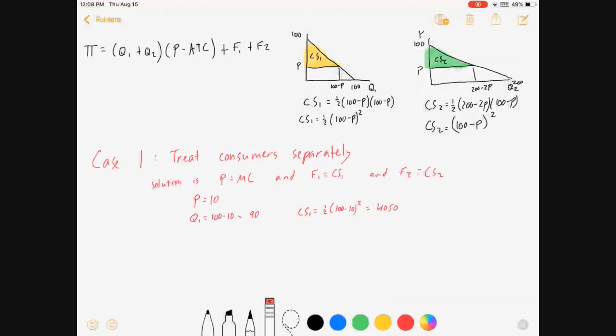Consumer surplus is 1/2 times (100 - 10) squared, which comes out to 4050. Q2 is 200 - 2 times 10 = 180. Consumer surplus for consumer 2 is (100 - 10) squared = 8100.